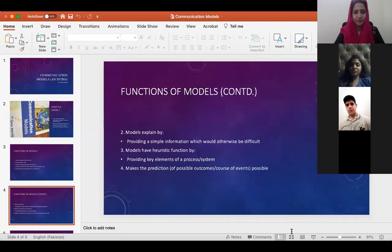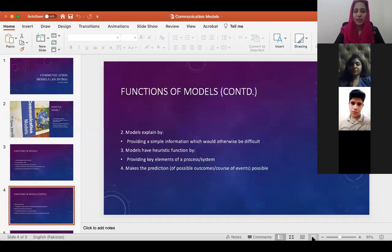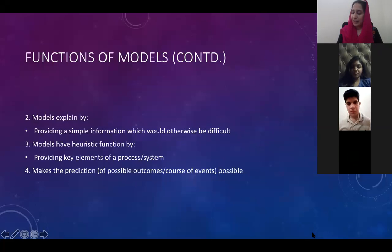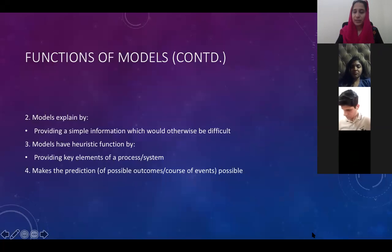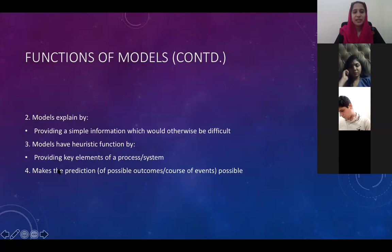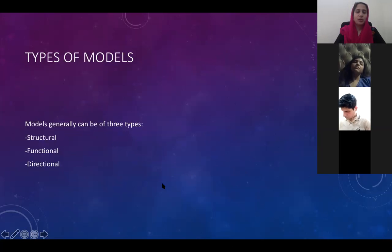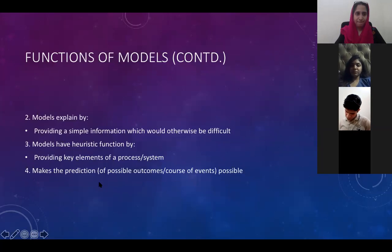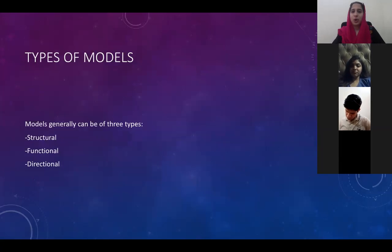Models explain things by providing simple information. Models have a heuristic function — the meaning of heuristic is to let others learn by themselves. Models give us a chance and provide an opportunity to learn things on our own. Models also provide key elements of a process and let us predict what the outcome is going to be.